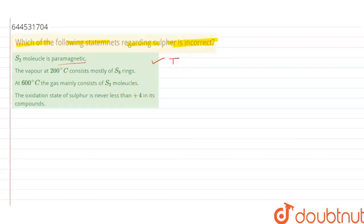Now let's see the second statement: the vapor at 200 degrees centigrade consists mostly of S8 rings. And the third statement given here is at 600 degrees centigrade, the gas mainly consists of S2 molecules. S8 rings are present at 200 degrees centigrade, and at 600 degrees centigrade we have S2 molecules.